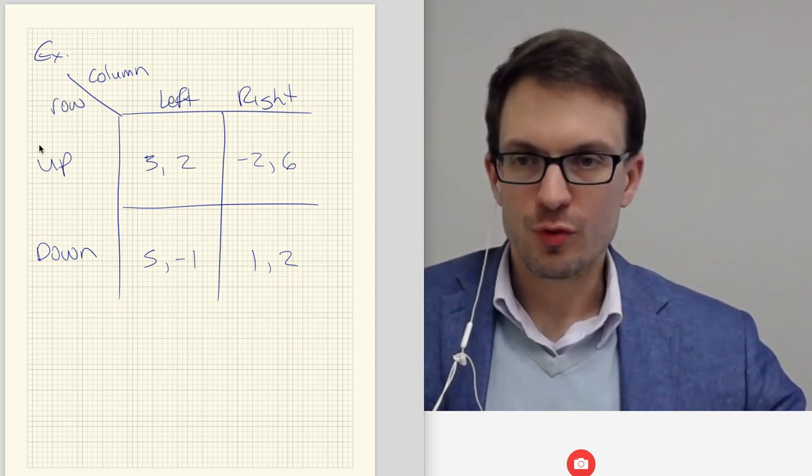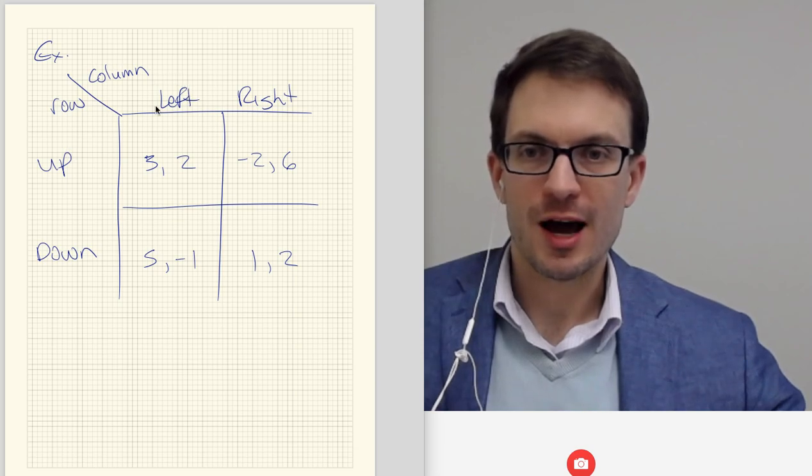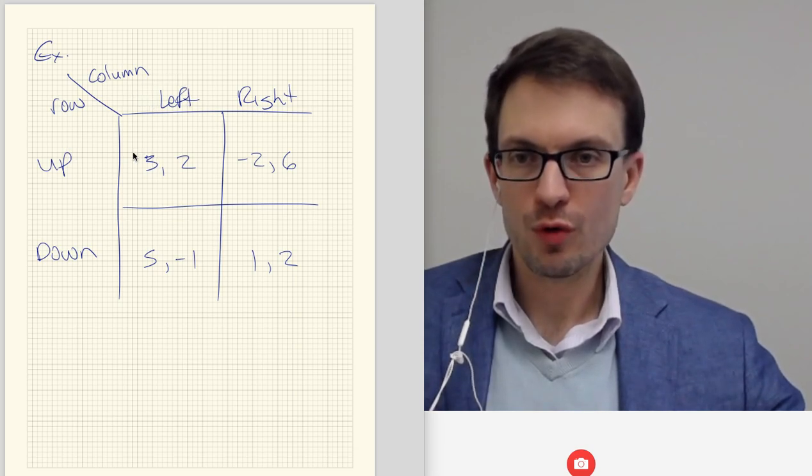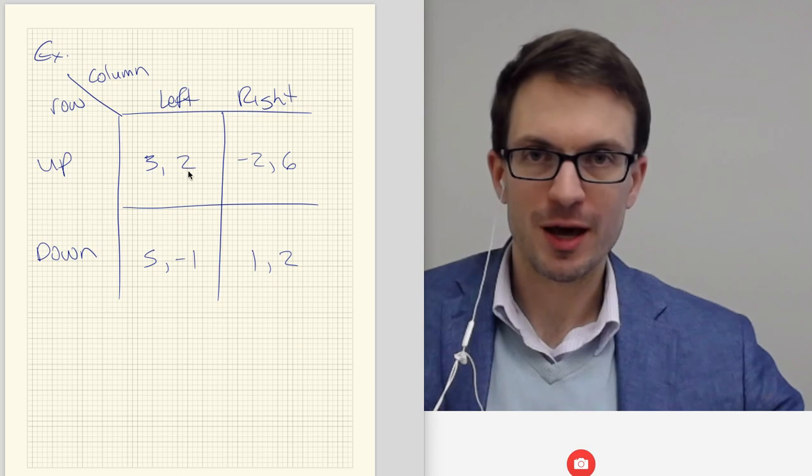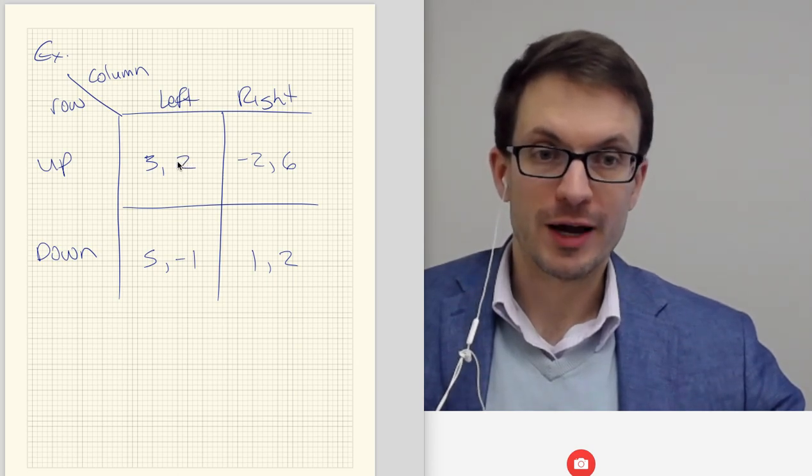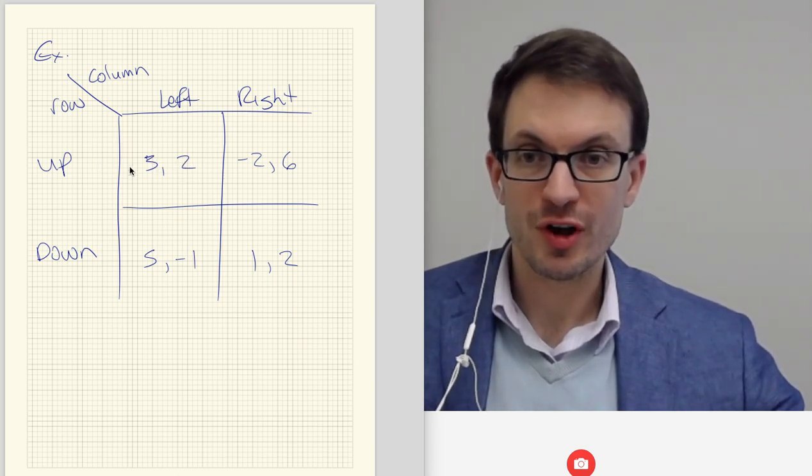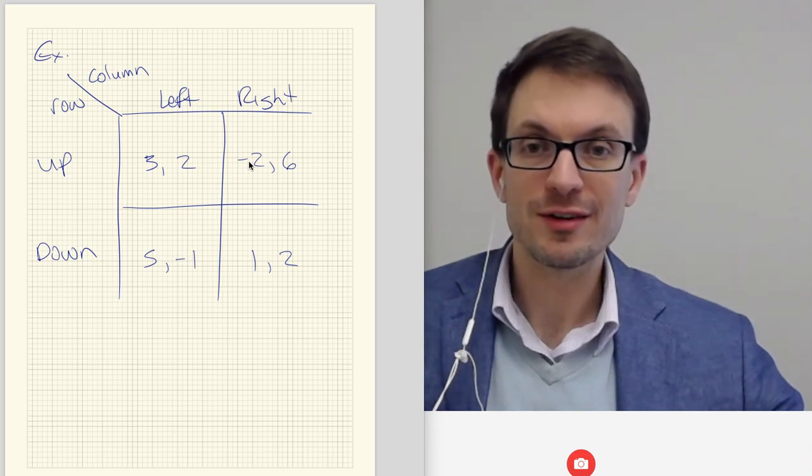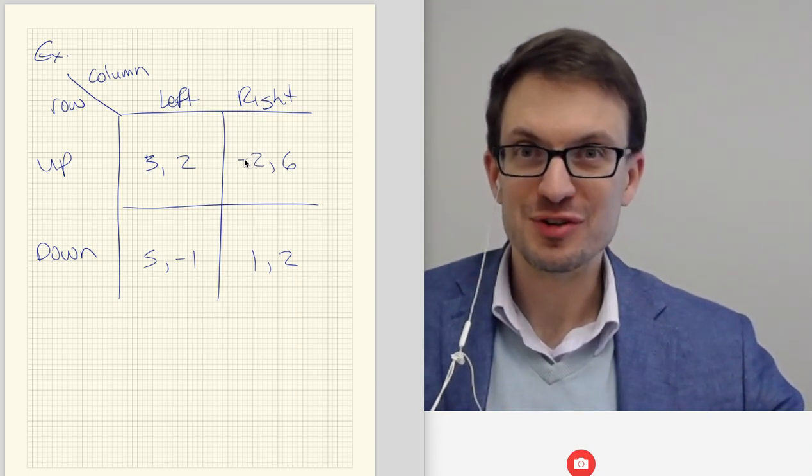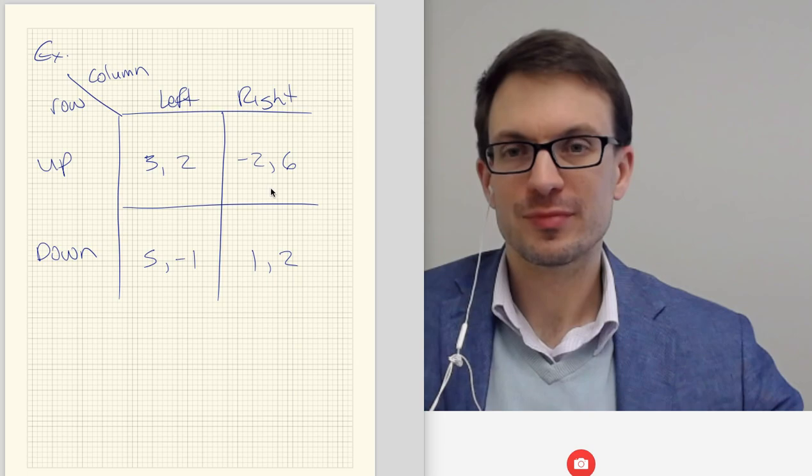And so if row player selects up and column player selects left, row will get a payoff of 3, column gets a payoff of 2. By contrast, if row chooses up but column player chooses right, now row gets negative 2 and column gets 6.